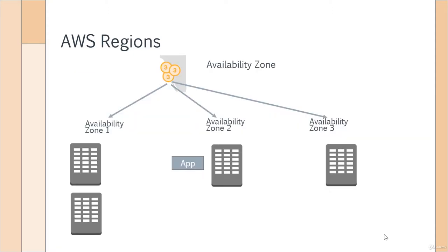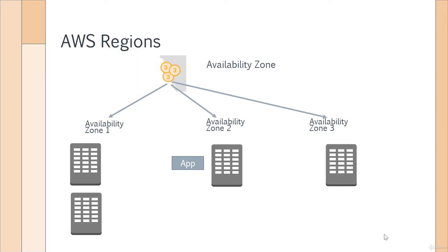Now let's quickly go through the concept of what these numbers mean. You have these numbers — three, three, and three. These are known as availability zones. Each region comprises of multiple availability zones.